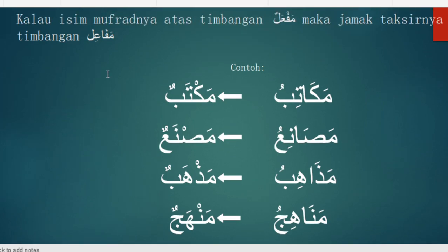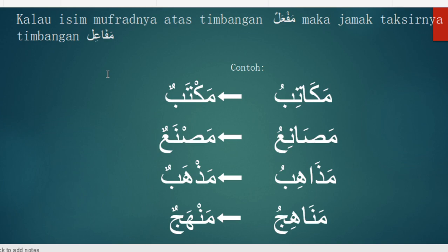Rumus berikutnya: kalau isim mufradnya atas timbangan Maf'alun, maka Jama' Taksirnya atas timbangan Mafa'ilu. Contohnya seperti Maktabun — Maf'alun, maka jama'nya menjadi Makatibun. Contoh lain: Masna'un — Maf'alun, maka jama'nya menjadi Masani'un. Kemudian Madzhabun menjadi Madzahibu, Manhajun menjadi Manahiju. Jadi bisa dilihat bentuk mufradnya lalu sesuaikan dengan timbangannya.